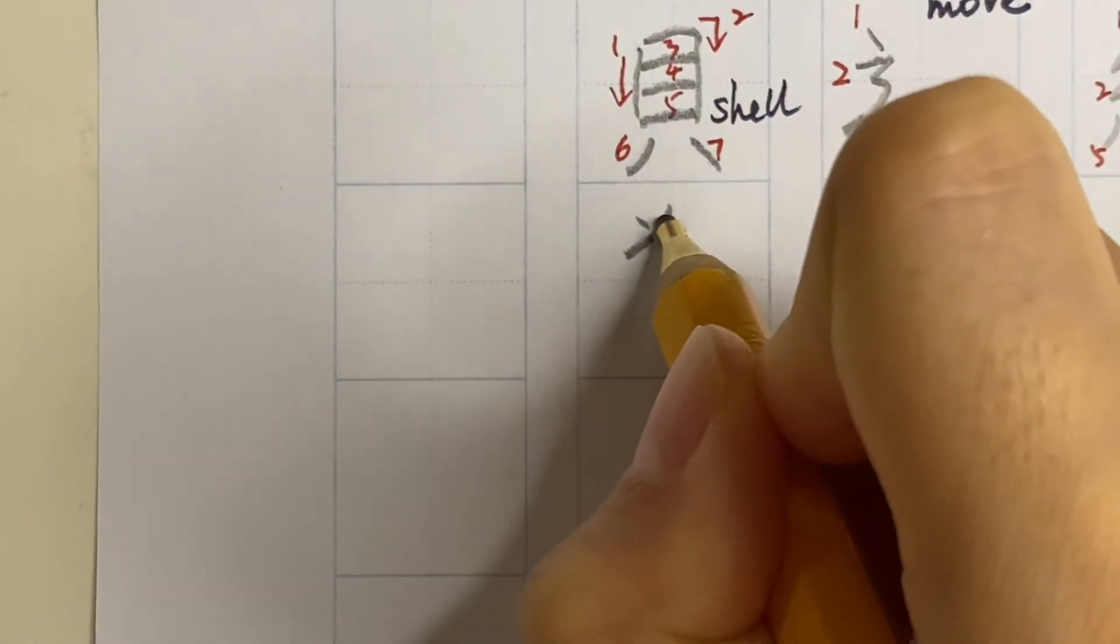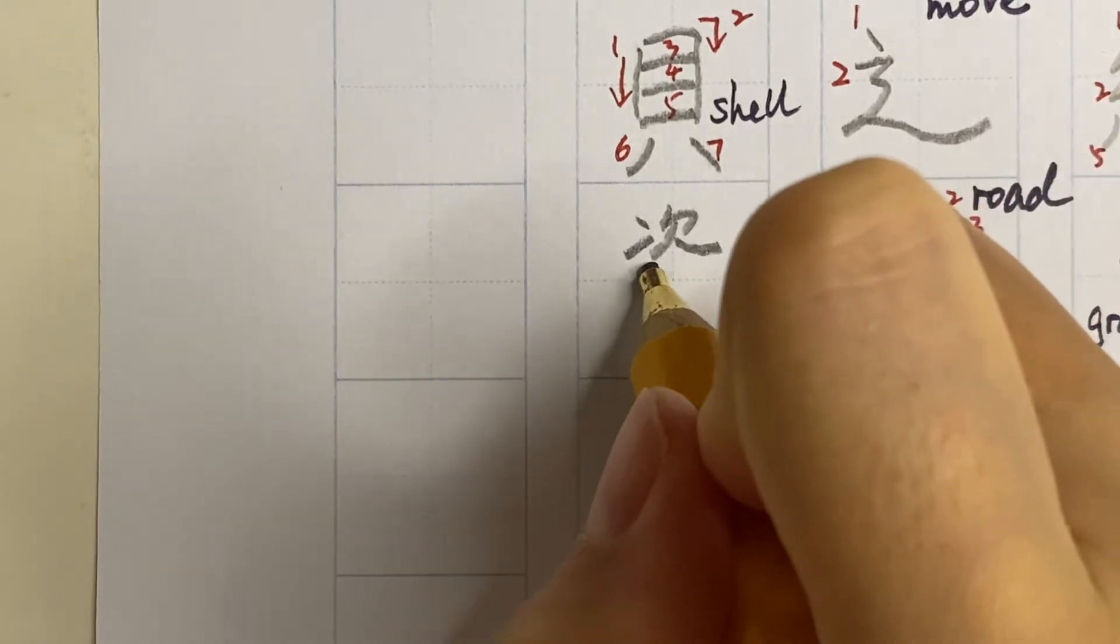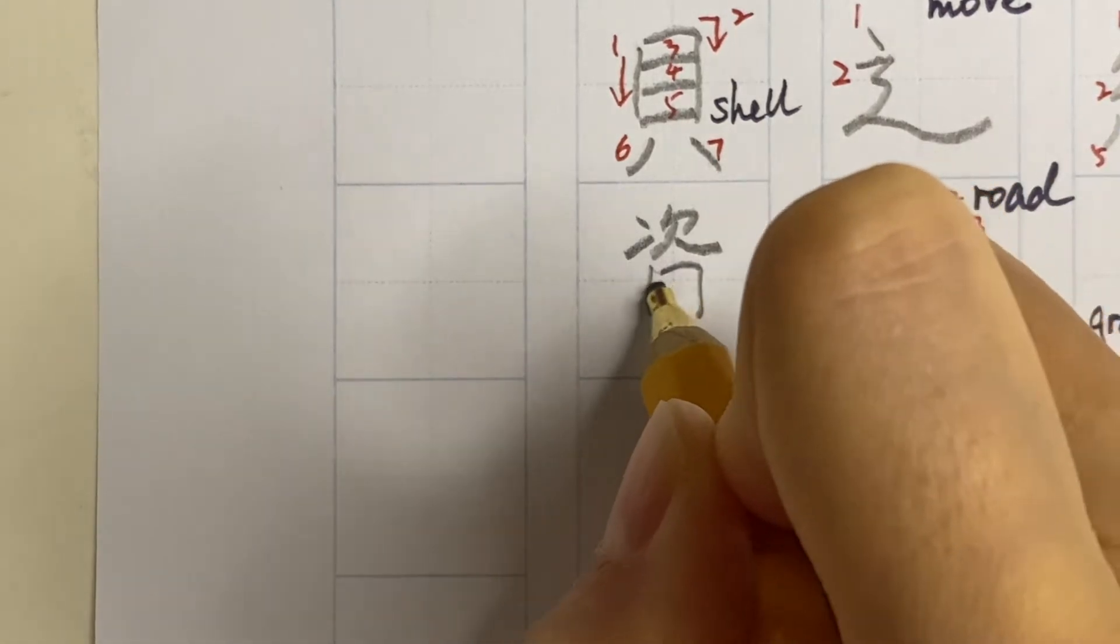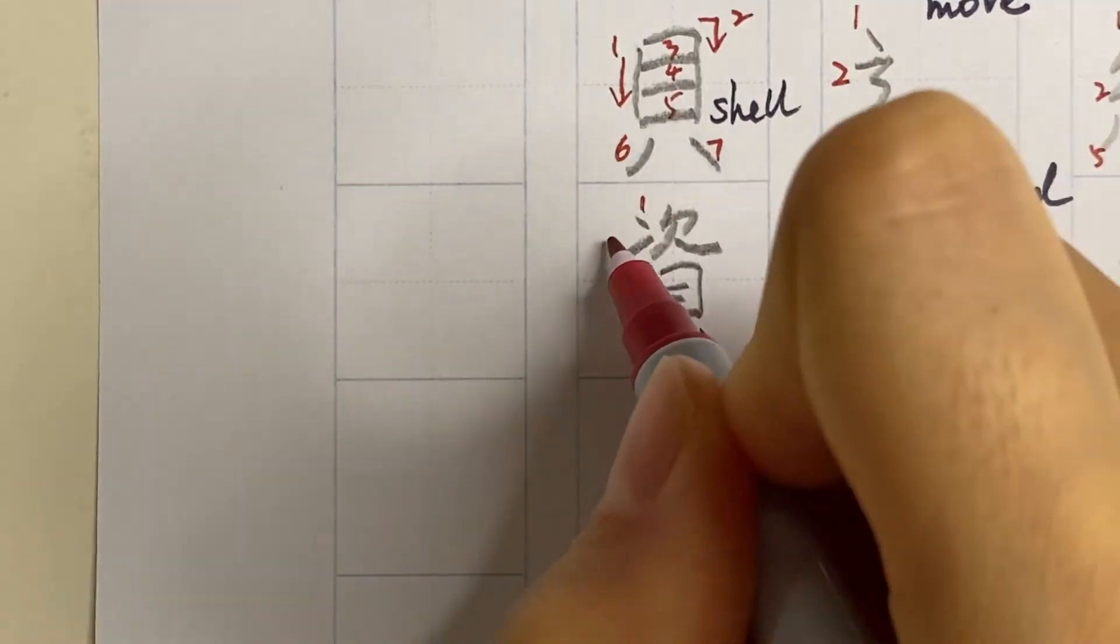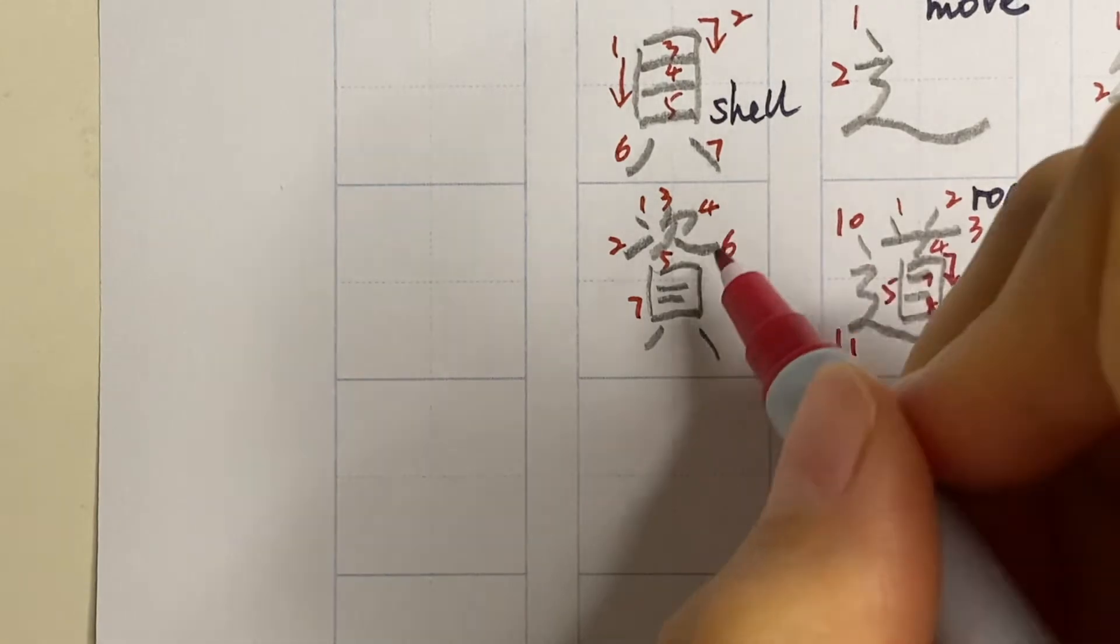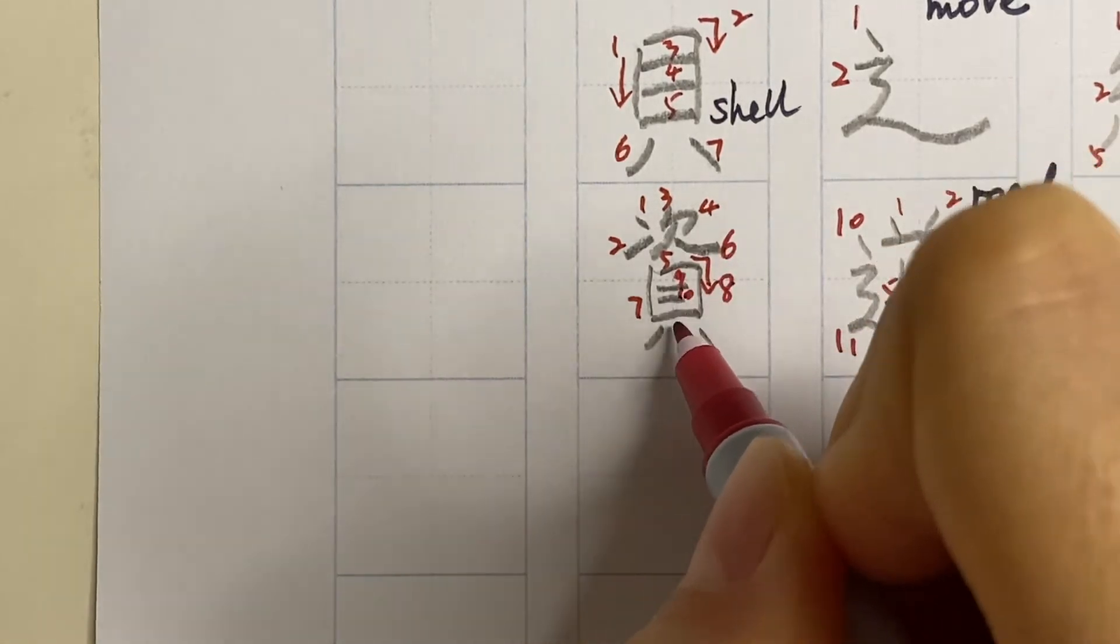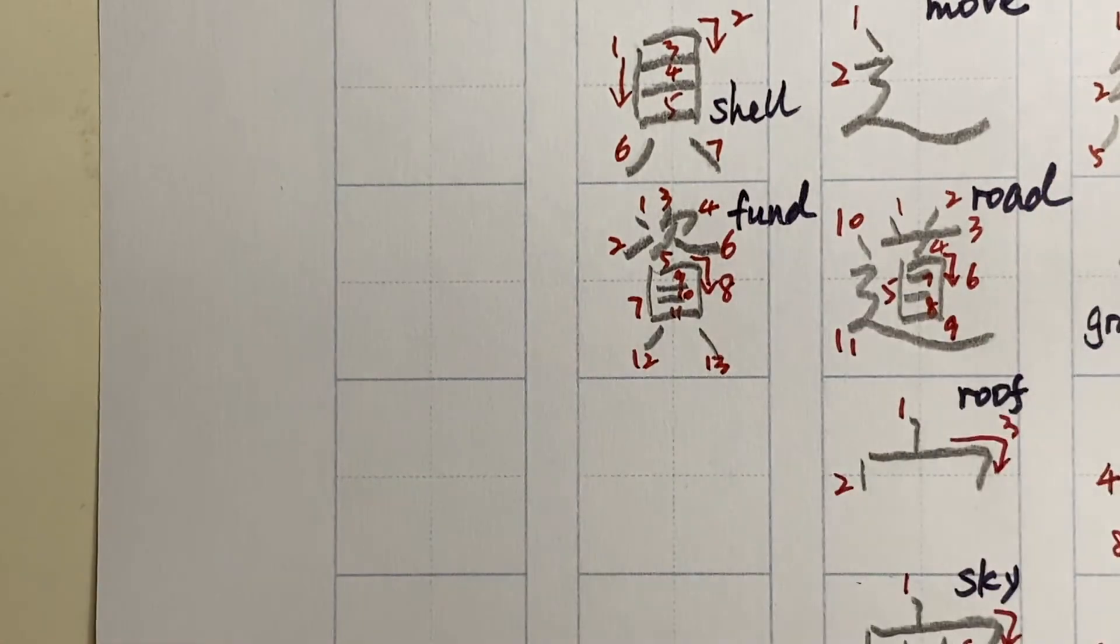So this is an example. We write the word ji or tsuki on top, followed by this shell at the bottom. Since in the olden times shells are used as currency, so kanji with this kai normally relates to money. This kanji is pronounced as si and it means funds.